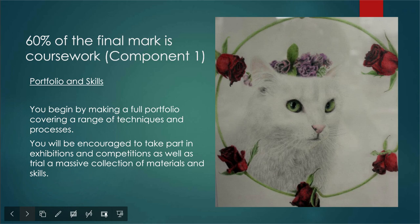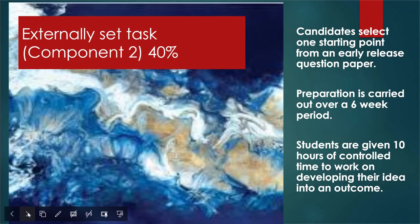60% of your final mark is made up of coursework, and this means that you can get teacher help to create some stuff that's really high quality, so you can develop your skills in whatever area you want to do. It's the main part of the course. When you finish that, so once you're halfway through year 11, you're given a choice of starting points. They're usually quite vague so you can still look at the artist you want to look at and work on topics that you want to work on. You're given six weeks to prepare and then you're in the art room for two days to do a final piece.